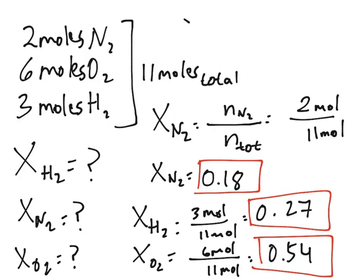If it's a unit of concentration, the more moles you have of something, like 6 moles of oxygen, the more concentrated it will be. So you could say that the oxygen occupies 54% of the total mixture, the hydrogen 27%, and the nitrogen 18%. That's it for the mole fraction.